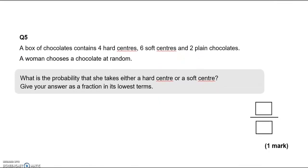Question number 5. A box of chocolates contains 4 hard centres, 6 soft centres and 2 plain chocolates. A woman chooses a chocolate at random. What's the probability that she takes either a hard centre or a soft centre? Give your answer as a fraction in its lowest terms. So looking at them in turn, a hard centre, the probability of picking a hard centre is 4 out of 12, which is 1 third. And the probability of taking a soft centre is 6 out of 12, which is half.